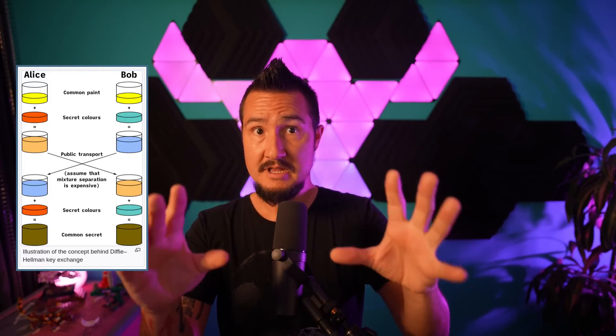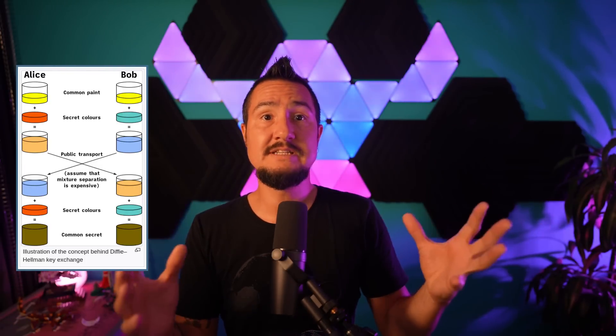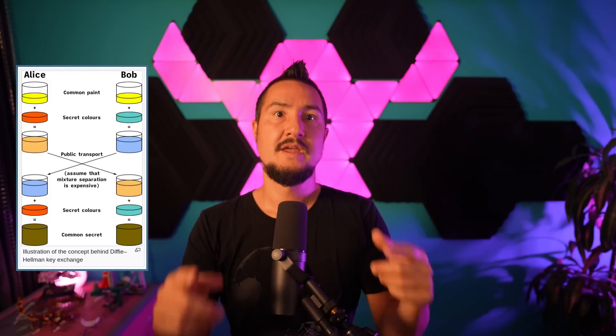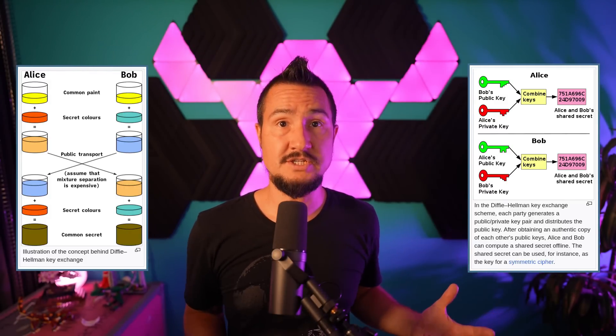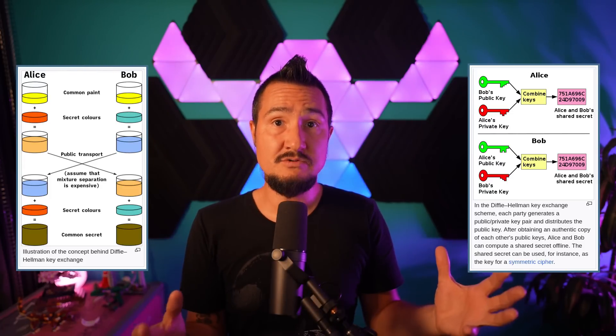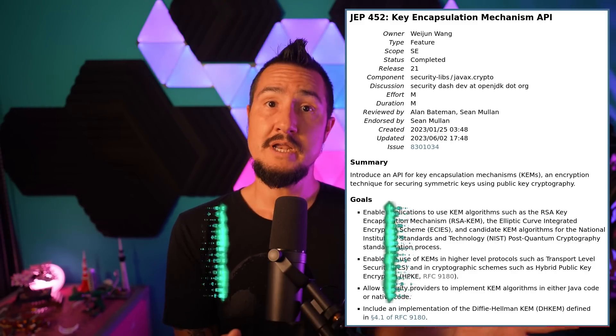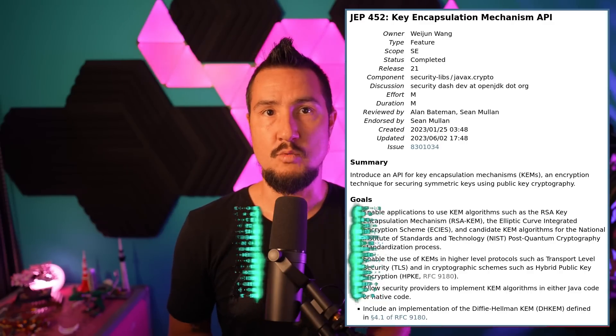Do you know the Diffie-Hellman key exchange algorithm? It sounds impossible on the face of it — it lets two parties compute an encryption key while an observer that sees every exchanged message cannot feasibly redo the computation, so that key is a secret only the two parties know. That's very helpful when you need to exchange encrypted information between parties that have no prior knowledge of each other. Diffie-Hellman is hence widely used, for example, to provide forward secrecy in TLS. Diffie-Hellman can be understood as an instance of a key encapsulation mechanism — a building block of hybrid public key encryption and an important tool for defending against quantum attacks. Starting with JDK 21, Java has an API to represent key encapsulation mechanisms in a natural way. Ana will record a newscast on this topic, probably in August — better subscribe so you don't miss it.